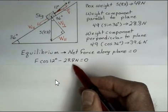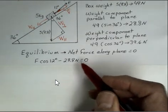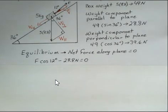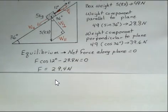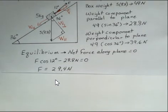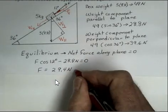We have 28.8 newtons down the plane acting force from the component of the weight of our object. So we can obviously calculate that, and the force is 29.4 newtons. That's the tension that we need in the rope.